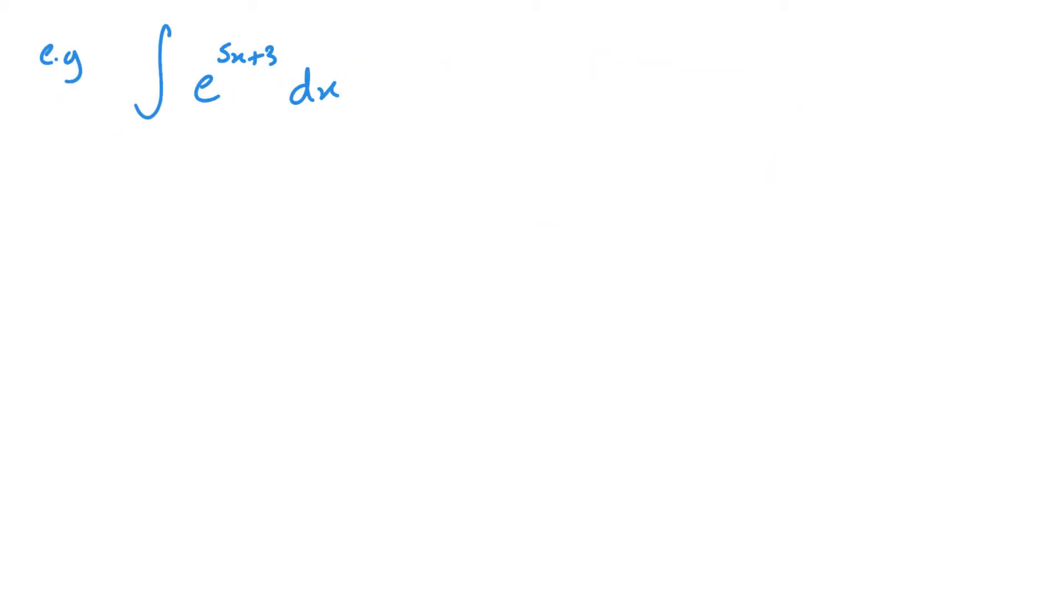Again, nice, straightforward one. So e to the 5x plus 3, that part is going to stay the same. Now remember, when you differentiate, you would multiply by this differentiated, you would multiply by 5, which means I need to divide by 5, or the same as multiplying by 1 over 5. Almost forgetting my plus C there.